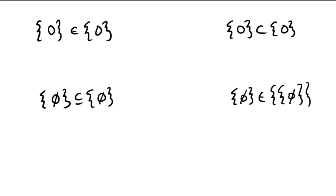On the top left this time, we have: the set containing zero is an element of the set containing zero. To be an element of means that object needs to be in the set. But on the right-hand side, the only thing inside of this set is zero — not the set containing zero, only the number zero. So this is a false statement.